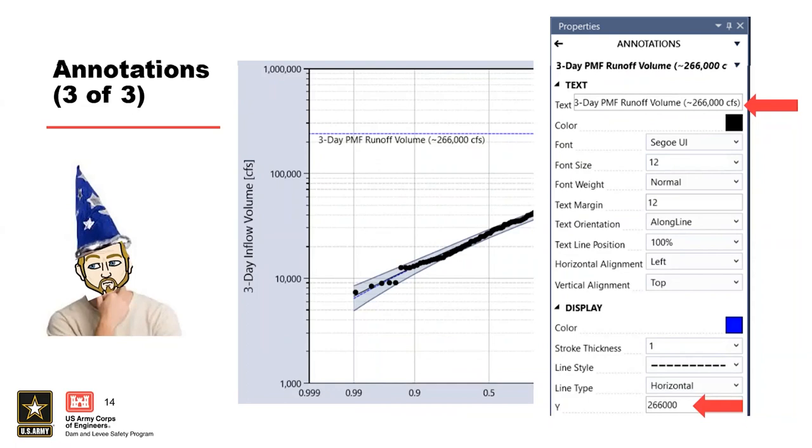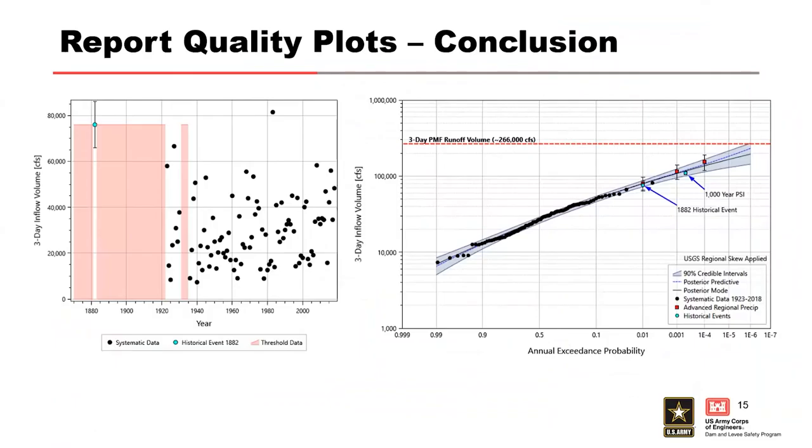In conclusion, when creating report quality graphics it's important to include descriptive titles, axes, series, and annotations. In RMC Best Fit, these edits can be performed within the properties window that is accessed via the settings or gear icon in the plot feature menu, or by right clicking on the feature of interest. Changes can be made to the text, style, font size, and color of the annotations.